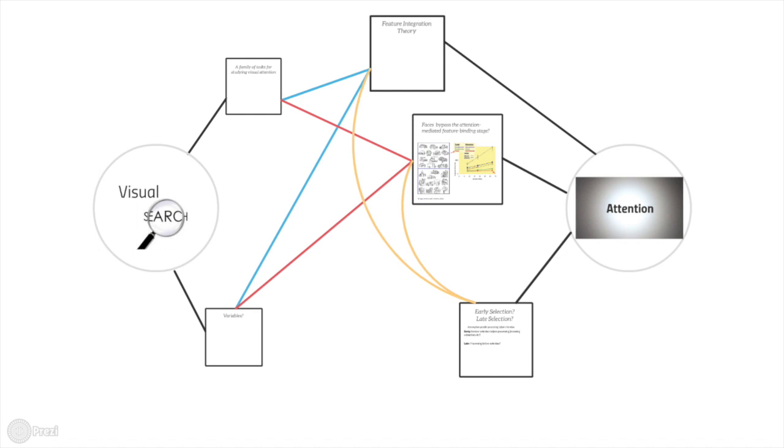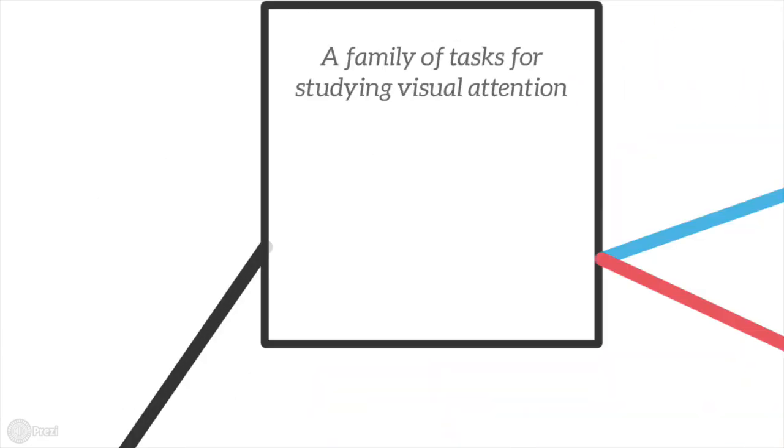So what is visual search and how can it help us to understand attention? Visual search is a family of tasks for studying visual attention.